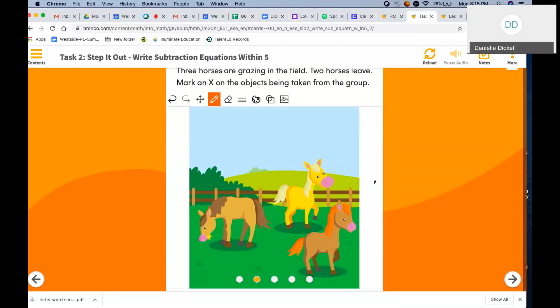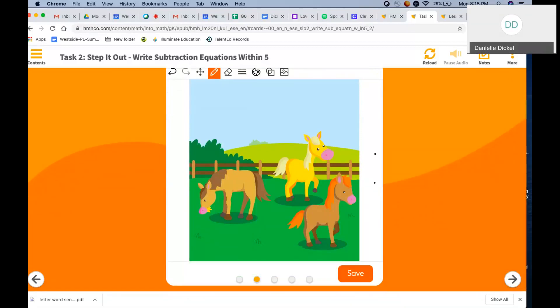So we had three horses in the field. Two horses decide to leave. One, two. How many horses are left? You're right. One horse is left. Pause the video if you ever need to draw your own picture and take some extra time.